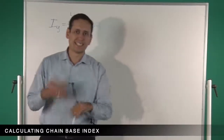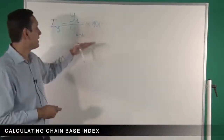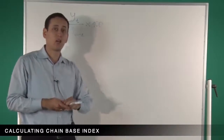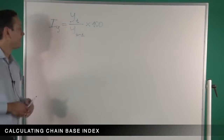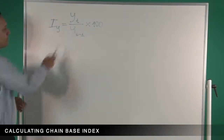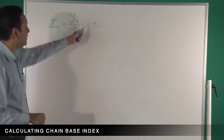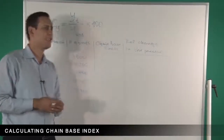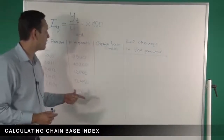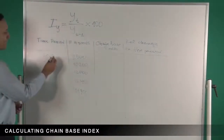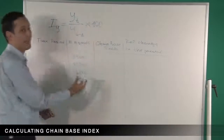Now let's consider chain-based index. In chain-based index, the base is not fixed. What we do is compare each year with the previous year and write down the change. You divide the value of commodity y at time t by the value of commodity y at the previous time period, and multiply by 100. Now we need to find the chain-based index for each year. For 2010, since there is no data for the previous year, we leave it blank.